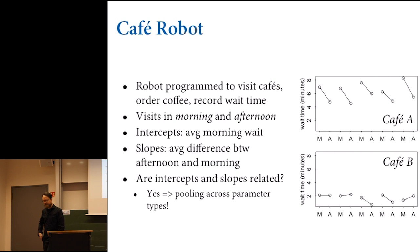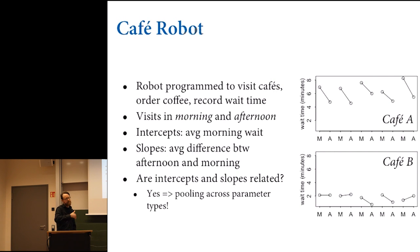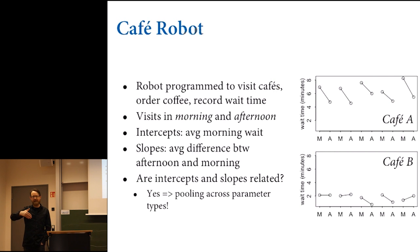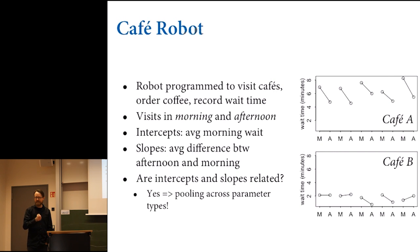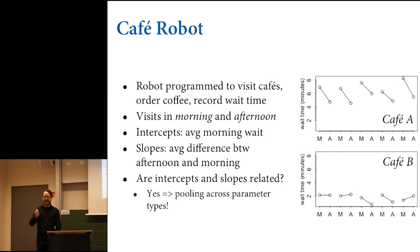How should we estimate these slopes? First, split the slope parameter across cafes and use a pooling estimator — there should be an average slope and a standard deviation among slopes, forming an adaptive prior estimated from the data. But there's one more step: since intercepts and slopes are correlated, you pool across them as well.